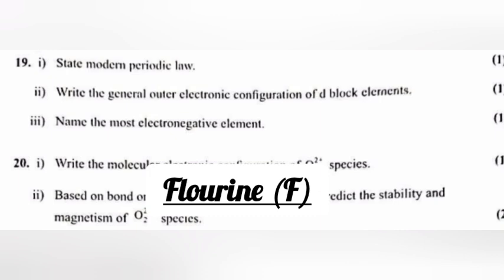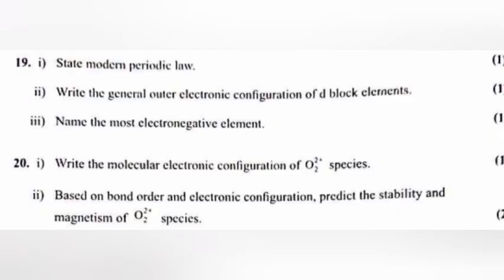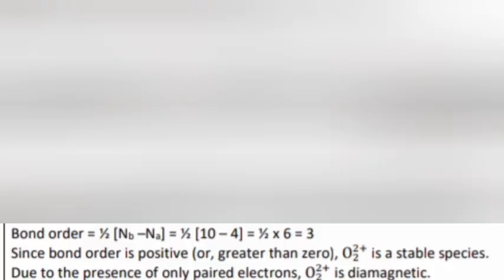Answer: Fluorine F. Question 20: 1. Write the molecular electronic configuration of O2 plus species. Answer: 14 electrons. 2. Based on bond order and electronic configuration predict the stability and magnetism of O2 plus species. Answer: Bond order equals half nb minus na equals half into 10 minus 4 equals half into 6 equals 3. Since bond order is positive, O2 plus is a stable species. Due to the presence of only paired electrons, O2 plus is diamagnetic.